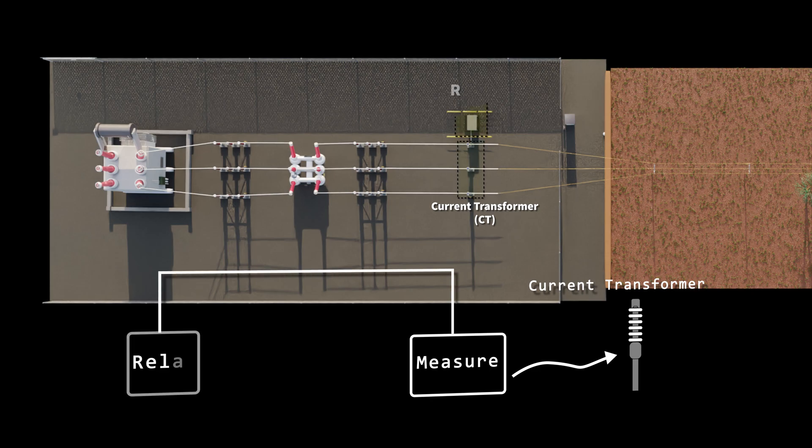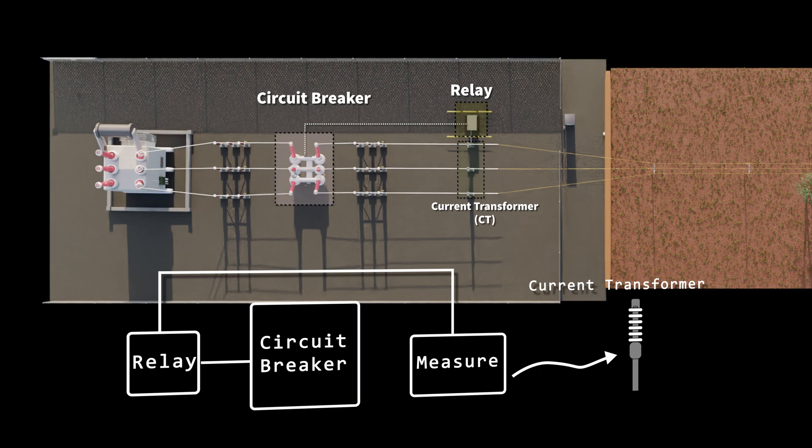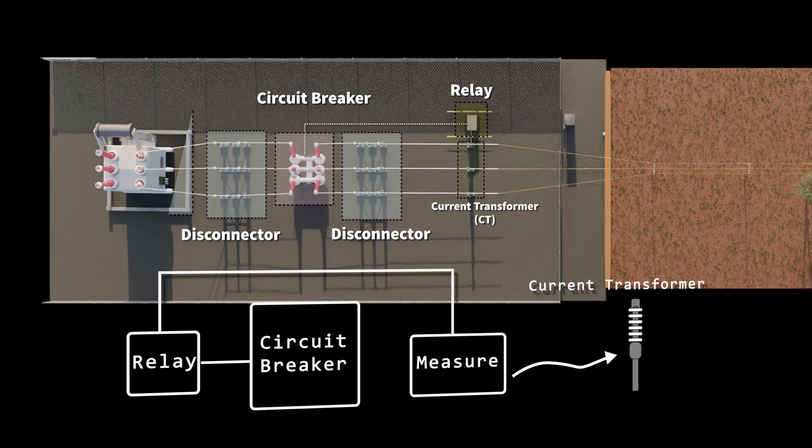Now the device which takes the current and decides if the feeder should be disconnected is called the relay. This is the brains of the system, and of course the circuit breaker has the physical ability, if instructed, to break fault current and disconnect the faulty parts of the system. Also shown here are the disconnectors and the power transformers, but they're not critical to the protection system that we're going to talk about today.